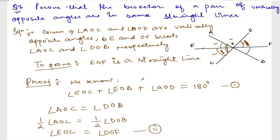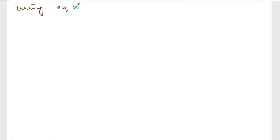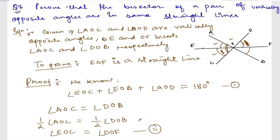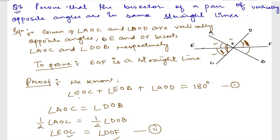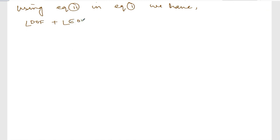Now, using equation number 2 in equation number 1: instead of angle EOC, I can write angle DOF. So equation 1 becomes: angle DOF plus angle EOA plus angle DOF plus angle EOA plus angle AOD equals 180 degrees.